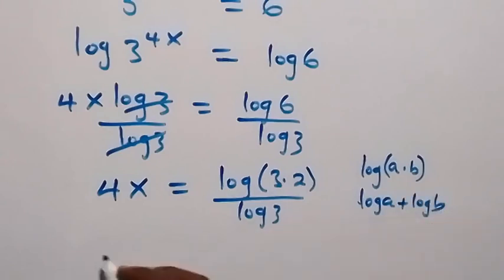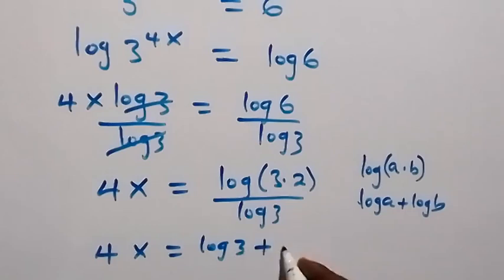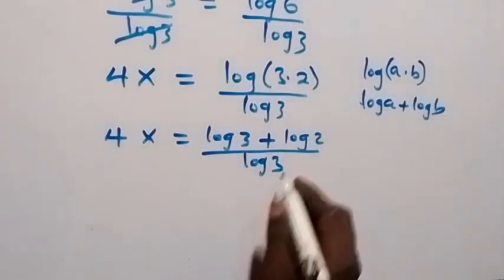So this becomes 4x equals log 3 plus log 2, all over log 3. When we separate these fractions,